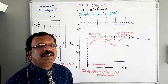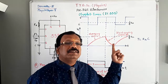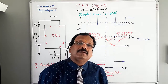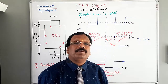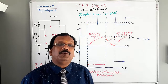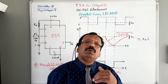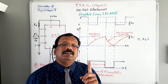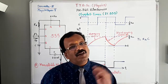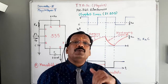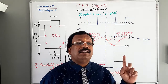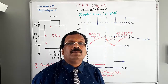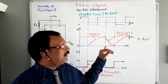This is the charging part of the working. When the trigger input is less than one-third VCC, the lower comparator output goes high, the flip-flop is set, the discharge transistor turns off, the output goes high, and the capacitor starts charging through RA. This charging is shown in the waveform as a charging curve, with time constant T = RAC.